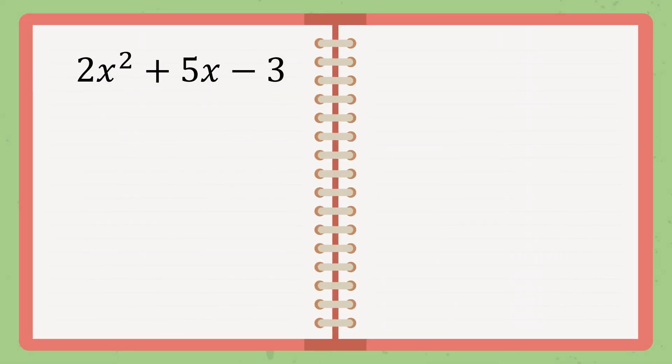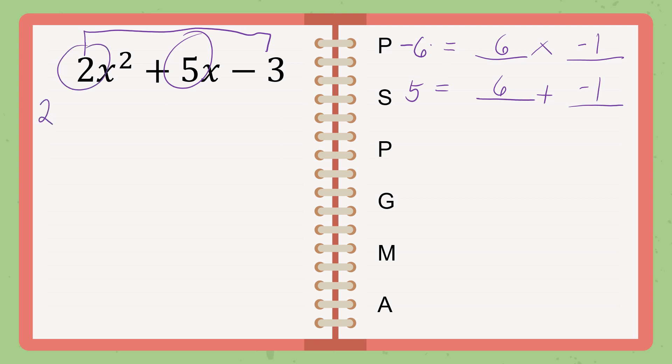Next, we have 2x squared plus 5x minus 3. Again, we will use again the PSPGMA. See? Multiply the 2 and the negative 3. We have negative 6. Then, the middle is 5. So, think of the two numbers that when you multiply, the answer is negative 6. But when you add, the answer is 5. And I think that is 6 and negative 1. So, 6 plus negative 1. Okay? Now, 2 goes here. Negative 3 goes at the end. Then, copy what we got. That is positive 6x and negative 1x.